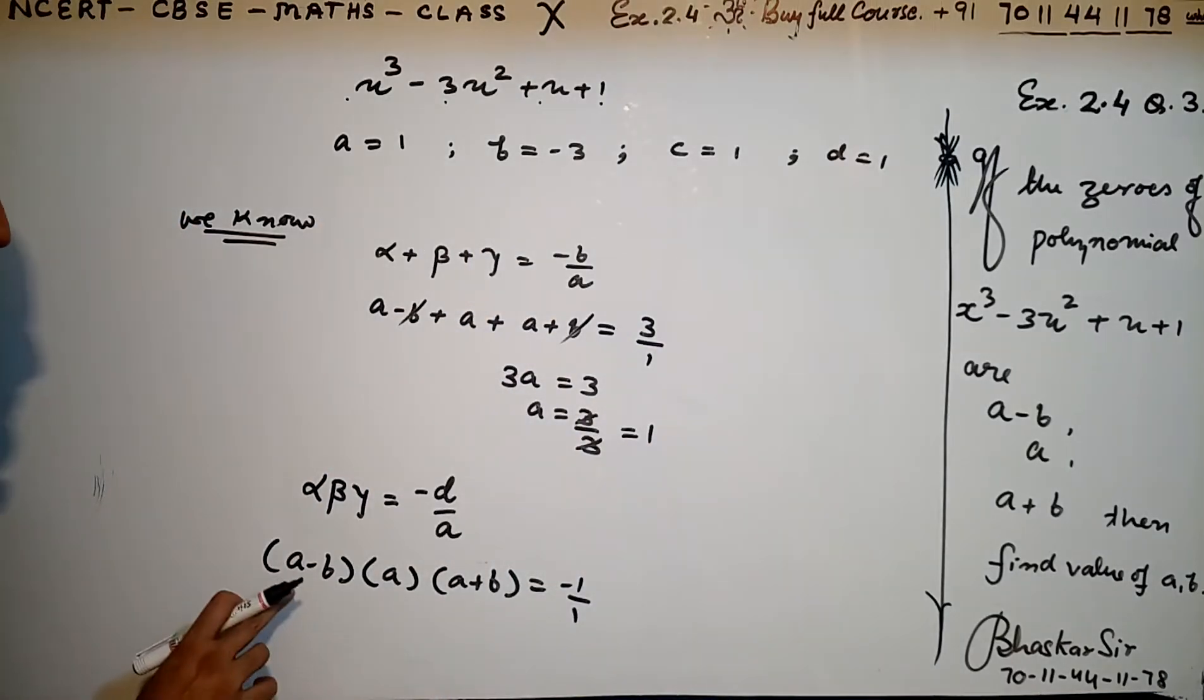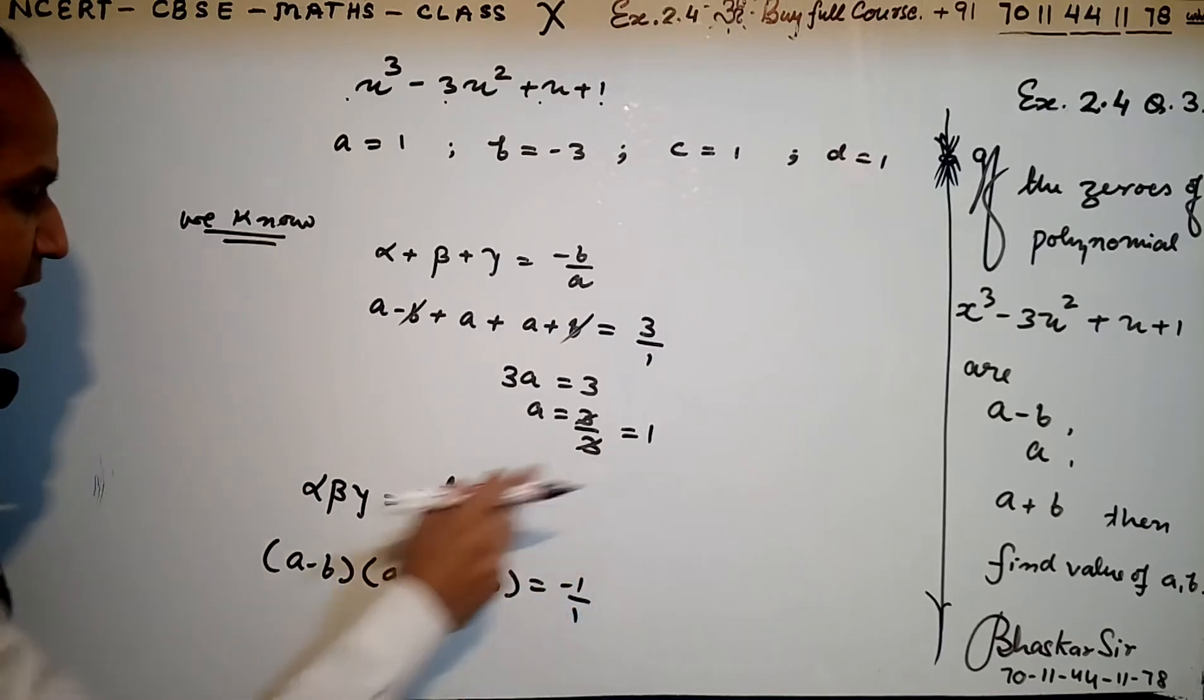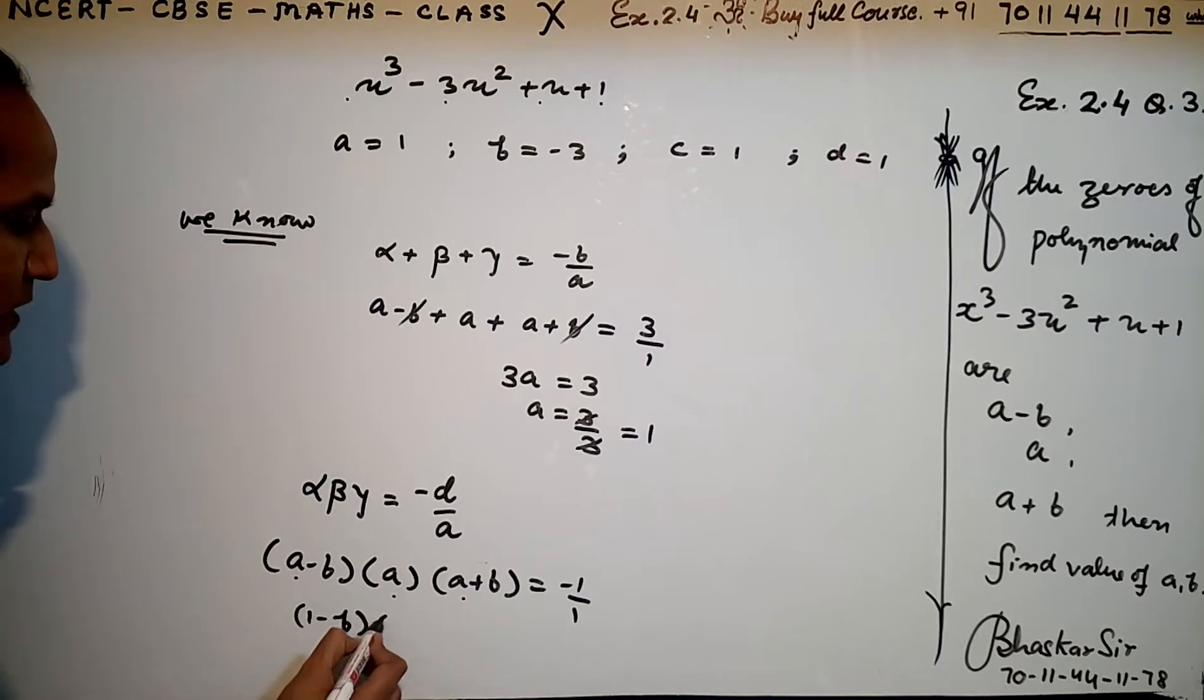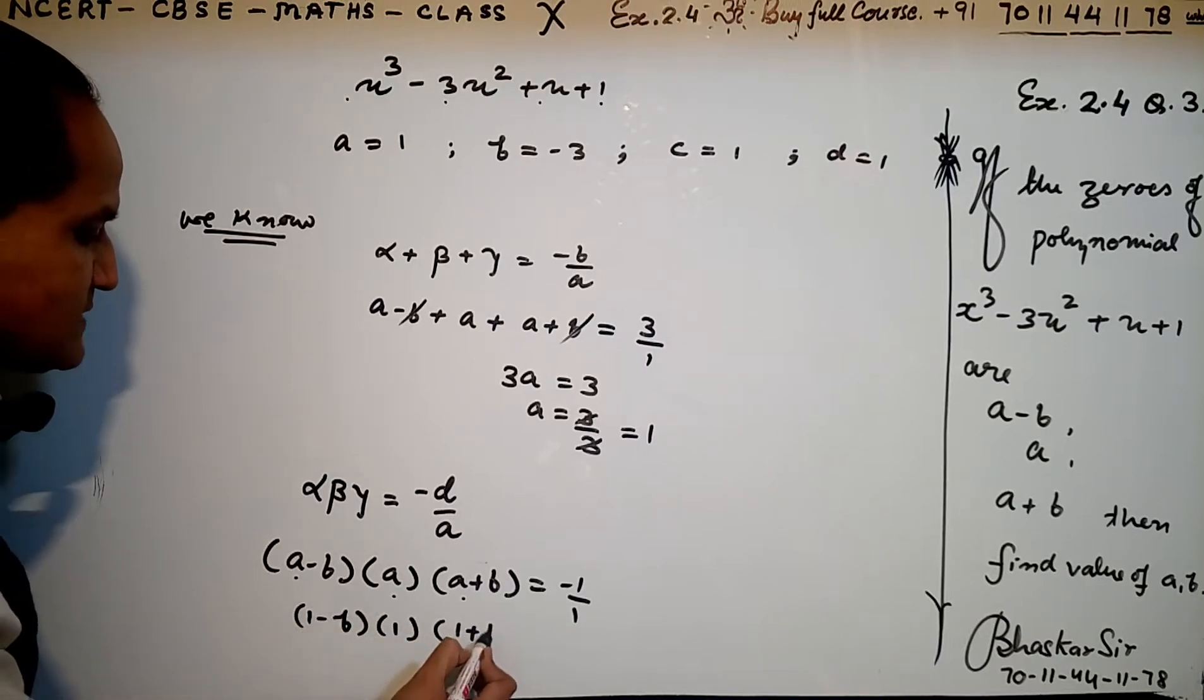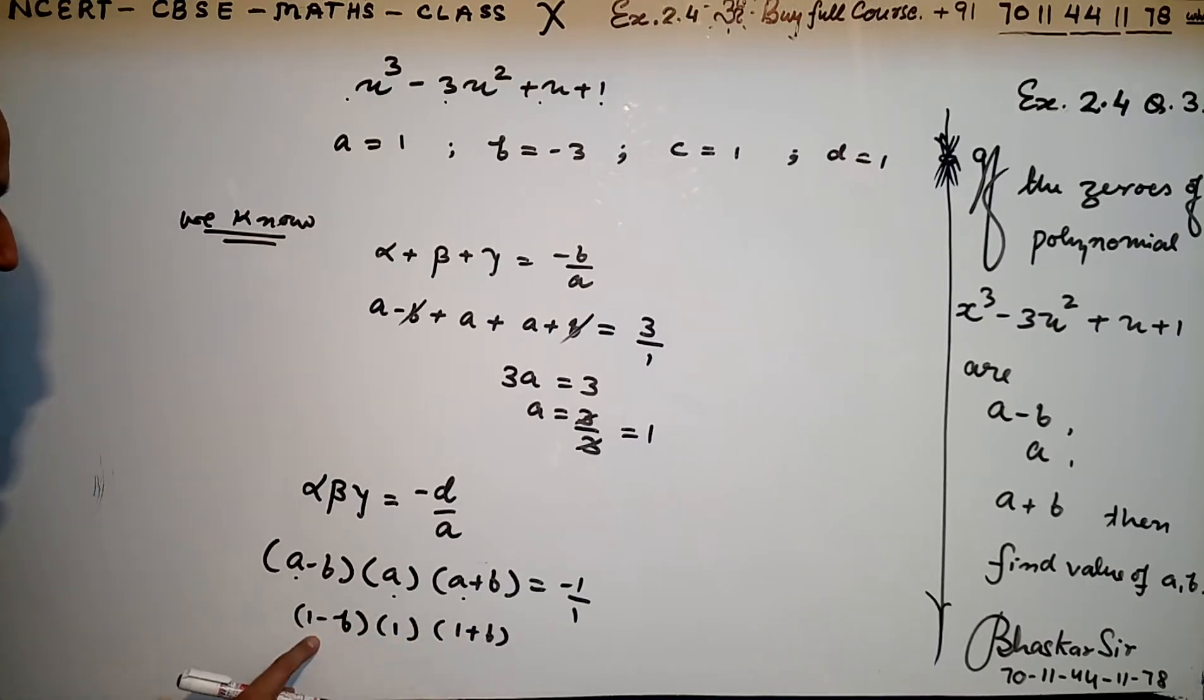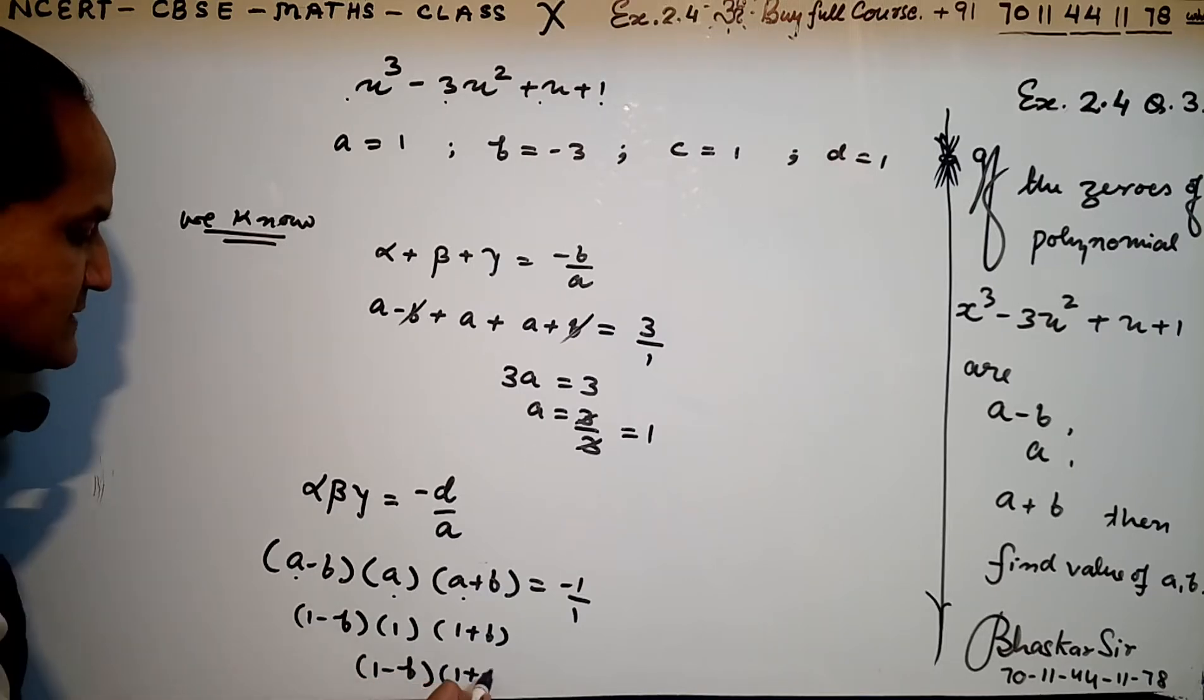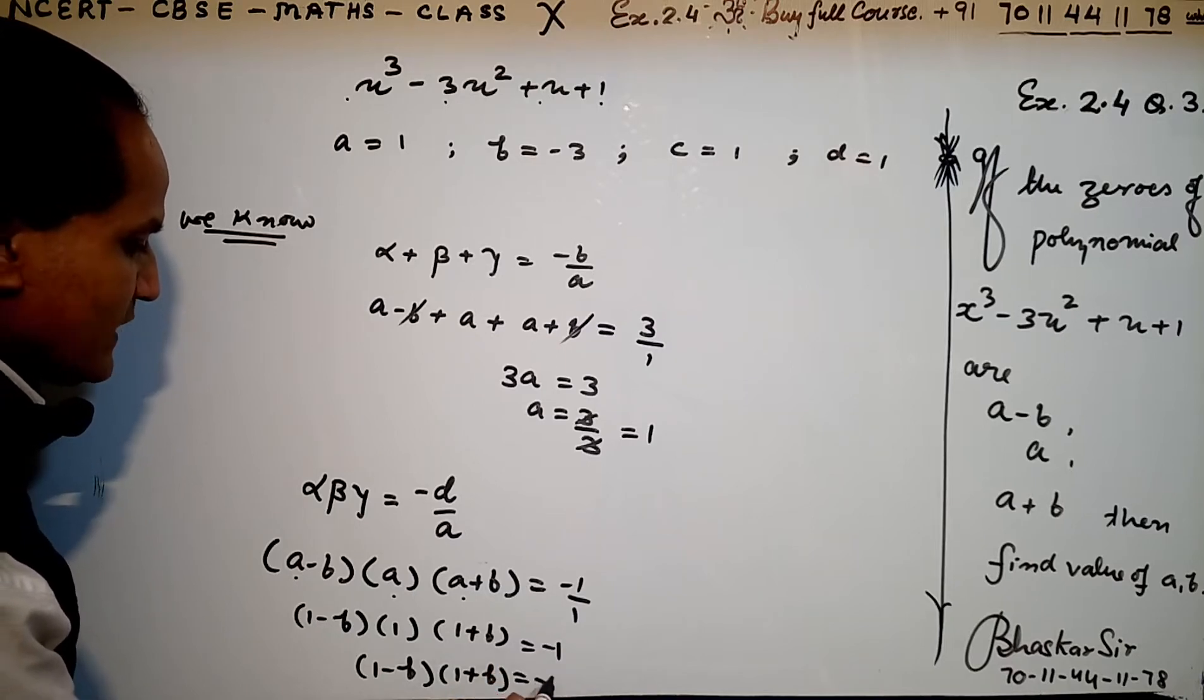What is the value of a? a = 1. So in place of a I can write 1: (1 - b)(1)(1 + b) = -1. This simplifies to (1 - b)(1 + b) = -1.